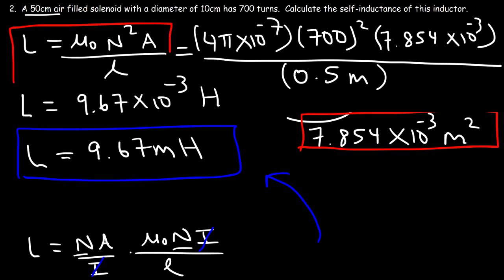To calculate the self-inductance of an inductor, all you need is the number of turns, the length of the solenoid, and the cross-sectional area. If you have the radius or diameter, you can easily calculate the area.